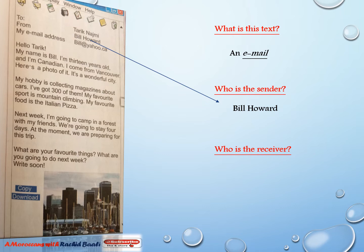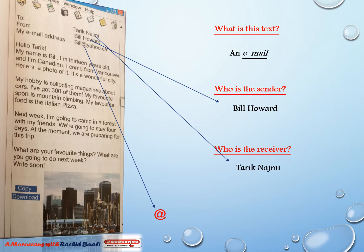Now let's move to the receiver. Bill wrote this email to whom? It's to Tariq Najmi. Now let's move to the email address. This symbol here — we no longer pronounce it 'arabesque' like in French; in English it's pronounced 'at'. And this symbol here, we no longer pronounce it as 'point', but in English it's pronounced 'dot'.